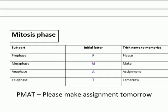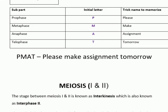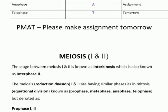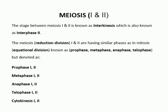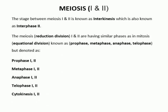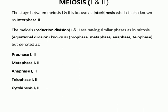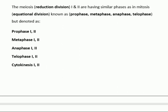Meiosis undergoes two rounds of successive cyclic division. The phases involved in meiosis I and meiosis II are the same as in mitosis. However, the very important thing to remember is prophase I, which occurs in meiosis I, as it is the most important and most confusing part.